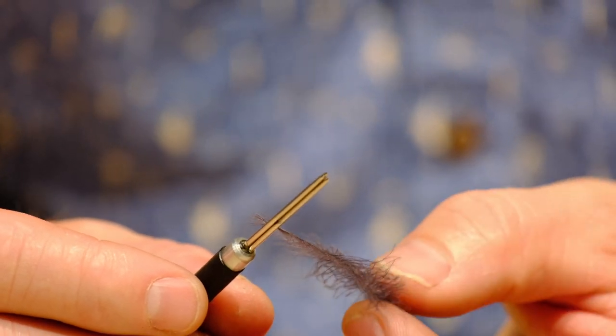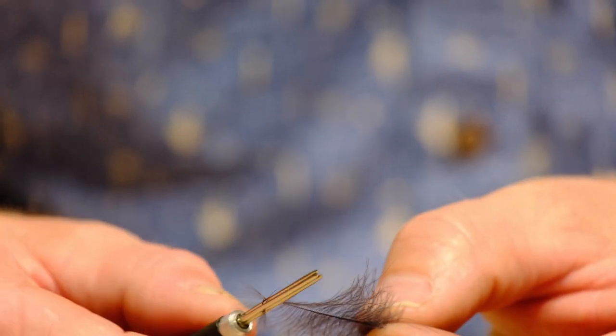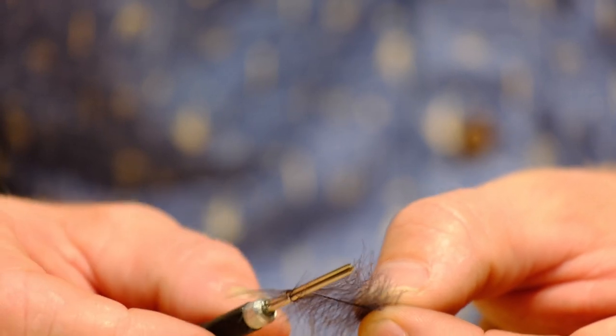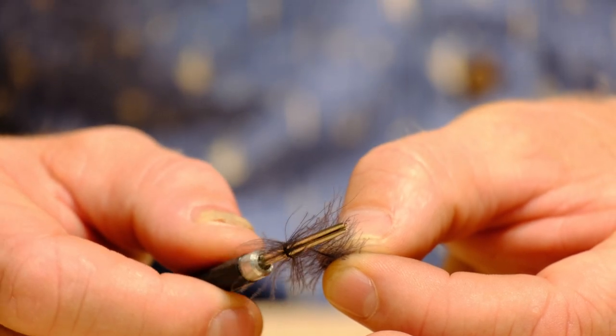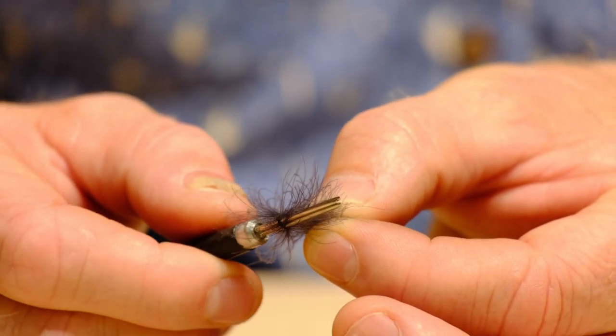Then grab the butt of the CDC feather and slowly roll it away from you. I found the stem of the feather will automatically want to lay on top of itself, which makes life easier.